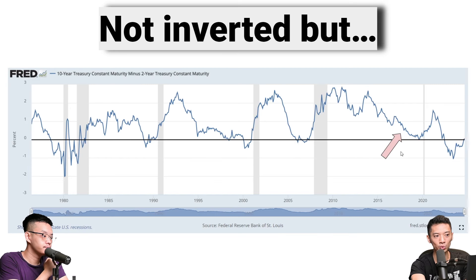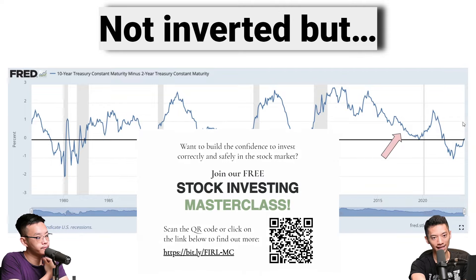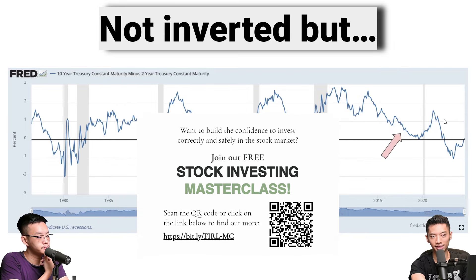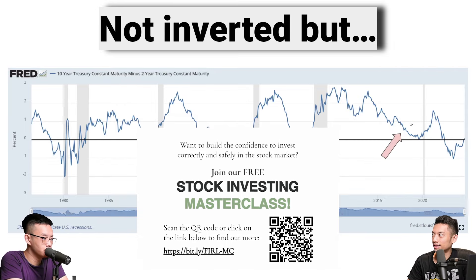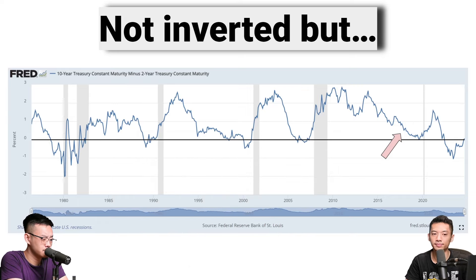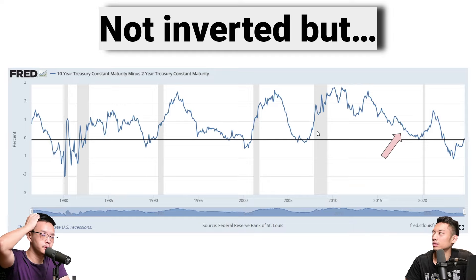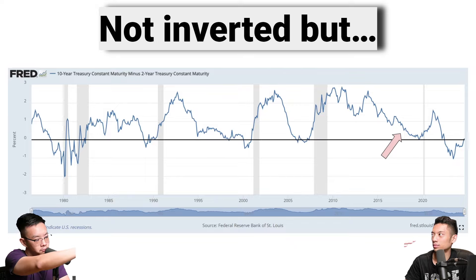We also have the 10-2 Treasury yield spread. Right now, it's no longer inverted. When it starts to go back to the positive area, potentially — typically it takes, if you eyeball the previous four instances, it'll still take one to two years before a crash comes. But you have to be mindful that if you look at the 1980s, it's not as clear as the next few ones.